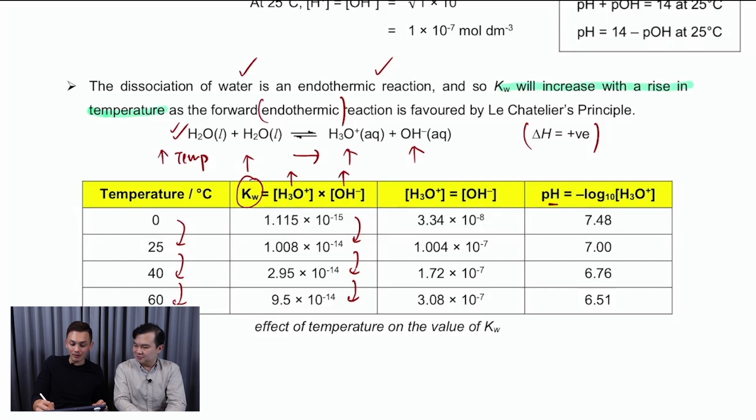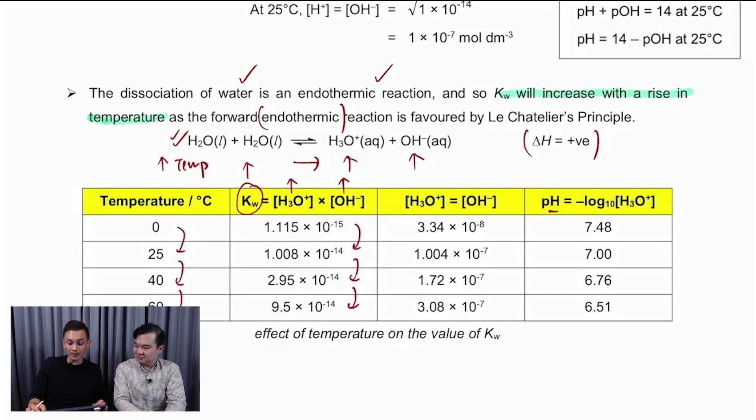Something to be mindful of is, yes, Kw is changing, Kw is increasing. But what happens to the pH of the solution? pH is negative log concentration of H3O+. So as the amount of H3O+ increases, what happens to pH? pH is going to drop. So your water from 25 degrees to 60 degrees, it's going to have different pH as the temperature of the solution increases.